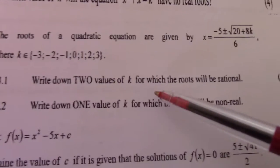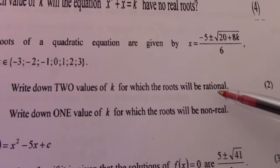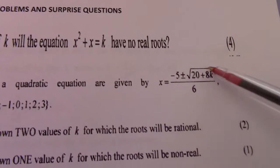Write down two values of k for which the roots will be rational. So for the roots to be rational that means that square root there must be positive.